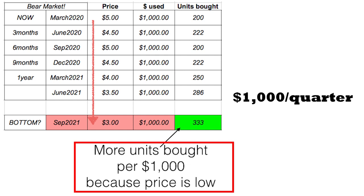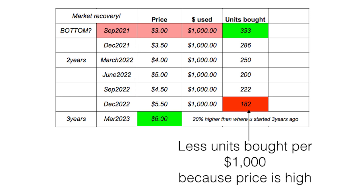Eventually when it bottoms out — hypothetically in September 2021 — at that quarter you actually bought the most units: 333 units for your one thousand dollars. That's pretty good. Now assuming you survived it, markets recover and rise back up, because markets will not go to zero if you are broadly diversified.